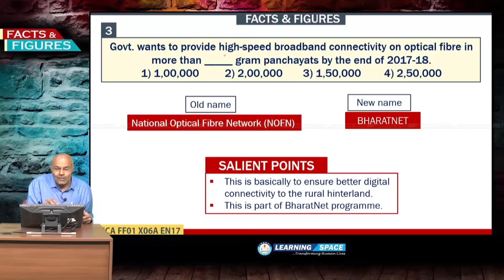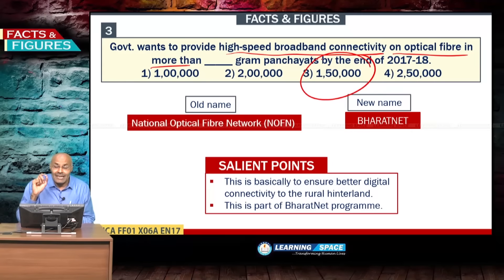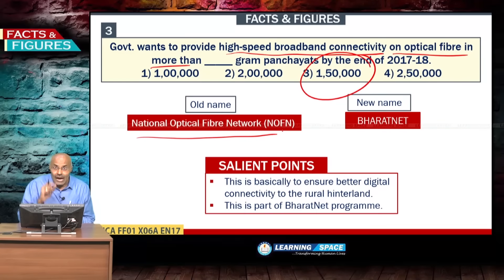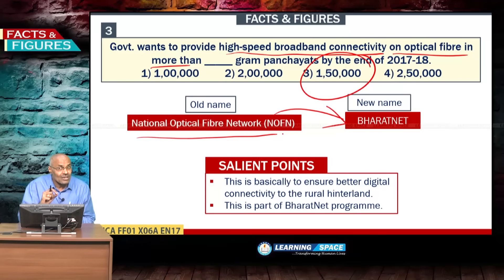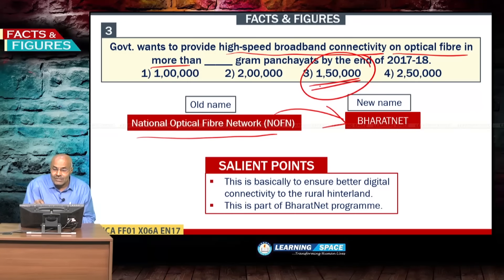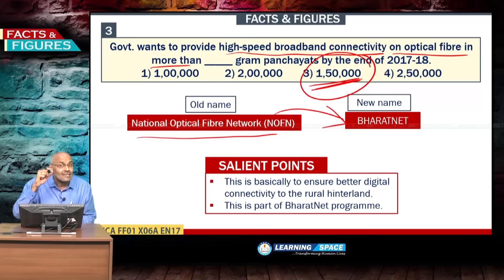The government wants to provide high-speed broadband connectivity on optical fiber for more than 1,50,000 gram panchayats by the end of 2017-18. The program was previously called the National Optical Fiber Network and has been renamed BharatNet. The purpose of BharatNet is to connect all 2,50,000 gram panchayats across the country with high-speed broadband, with 1,50,000 covered in the first phase.